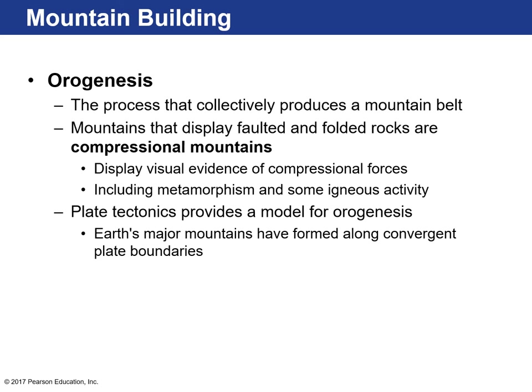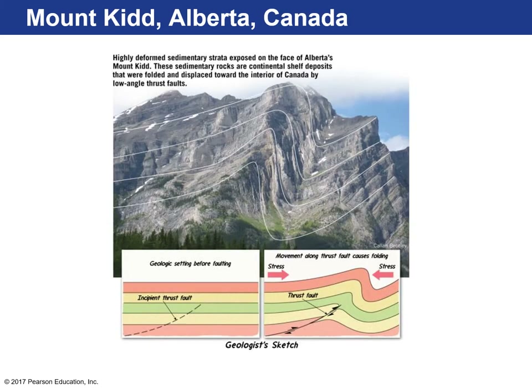When this happens, a lot of metamorphic rocks will be created, there's some igneous activity, and there's a lot of geologic action occurring. Plate tectonics theory really provides the model to explain orogeny, and many of the major mountain chains we find on Earth are the result of this plate tectonic convergence.